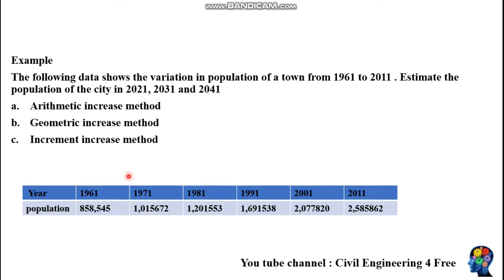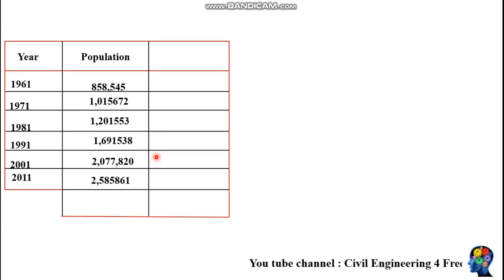We are given population data for half a century and are required to estimate future population using the arithmetic increase method, geometric increase method, and incremental increase method. Let's first predict population using the arithmetic increase method by constructing a table with columns for year, population, and increase.